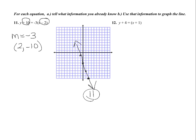For number 12, the slope is whatever comes in front of the parentheses — there's nothing there, so the slope is 1. The point is the opposite of 1, which is negative 1, and the opposite of negative 4, which is negative 4 — so start at (-1, -4). Go up 1 to the right 1, or down 1 to the left 1, and there is your line. Stop the video and try the next two problems on your own.